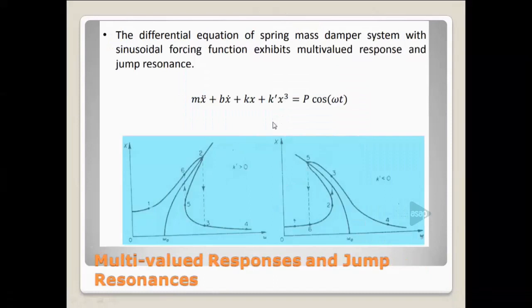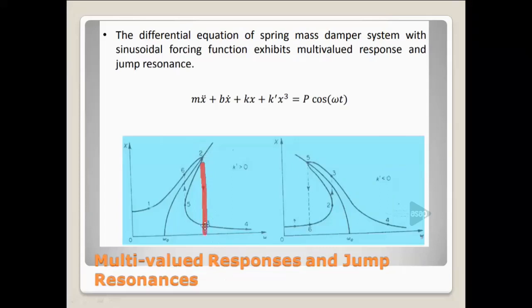For multi-valued response: at a particular frequency, you can see multiple values — for example, points 2 and 3 are two different values at the same frequency, which means the response is multi-valued. Jump resonance means the characteristic changes abruptly: the curve is moving in the forward direction, and at a particular point it completely reverses — the phase reverses completely — and this is called jump resonance.